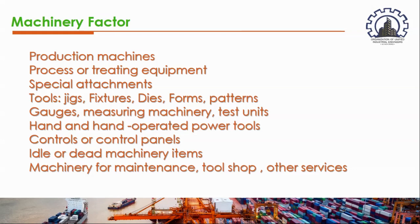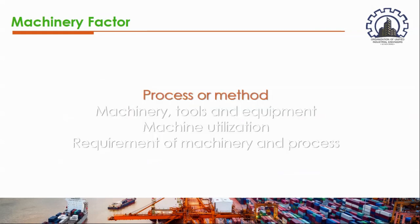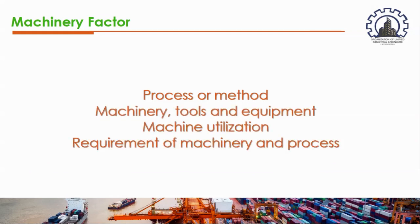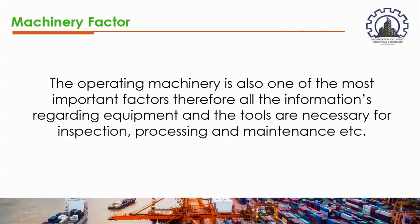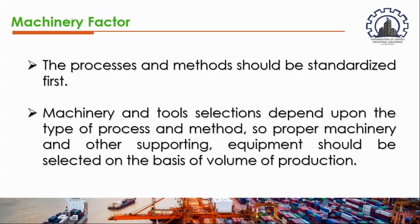Other features include test units, hand and power operated tools, control panels, idle or dead machine items, machinery from the tool shop, and other services. The list of considerations under the machinery factor includes: first, process or method; second, machinery tools and equipment; third, machine utilization; and finally, requirements for machinery and process. Operating machinery is one of the most important factors, so all information regarding equipment and tools necessary for inspection, processing, and maintenance is essential.